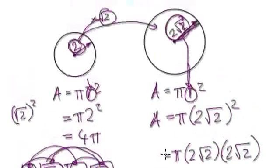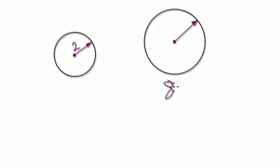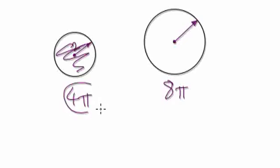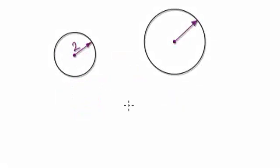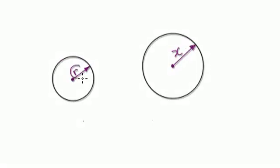The area of this big circle is 8 pi. The area of the original circle was 4 pi. You can see that the area has doubled — 4 pi times 2 is 8 pi. So the answer to the question is: if you want to double the area, you should multiply the radius by the square root of 2.